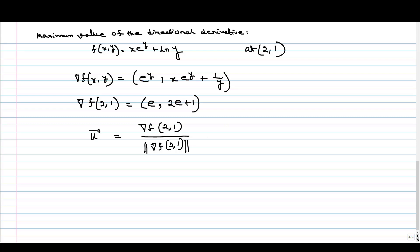So if we calculate this, we will get (e, 2e+1), this is the vector we have found. And in the denominator we have to write the norm, so it is e^2 + (2e+1)^2.